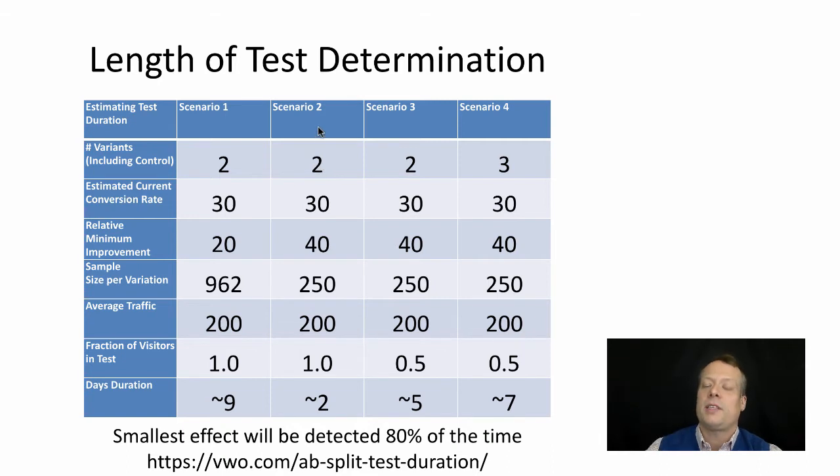Now imagine a different scenario with two variants where the estimated conversion rate is 30 percent and we want to observe at least a 40 percent minimal improvement - going from 30 percent to 42 percent conversion rate. Our sample size goes way down to 250, which means if we get 100 to each website, we'll have numbers in two and a half days.